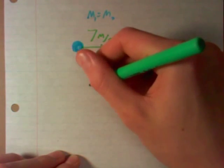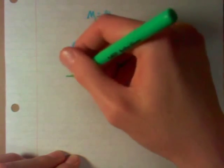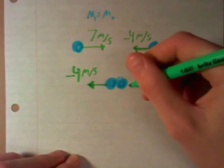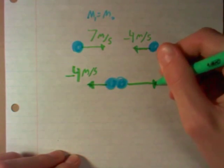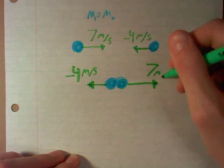So now ball one is going negative four meters per second squared, and ball two is going seven meters per second squared.